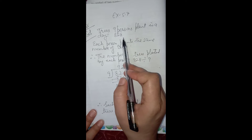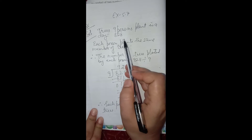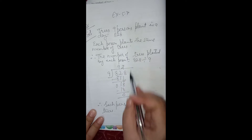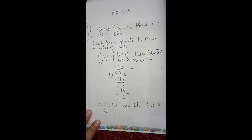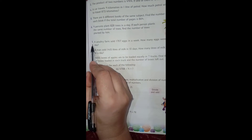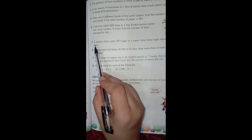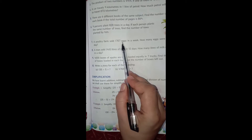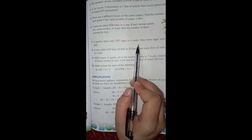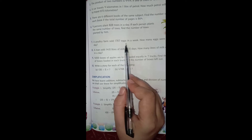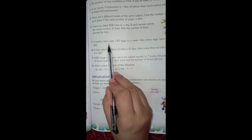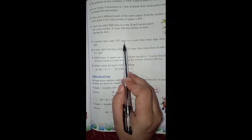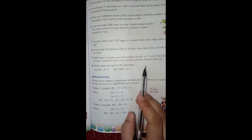If 9 persons plant 828 trees in a day, each person planted 92 trees. Now the next question is question number 7. A poultry farm sold 1757 eggs in a week — that is in 7 days. How many eggs were sold each day?